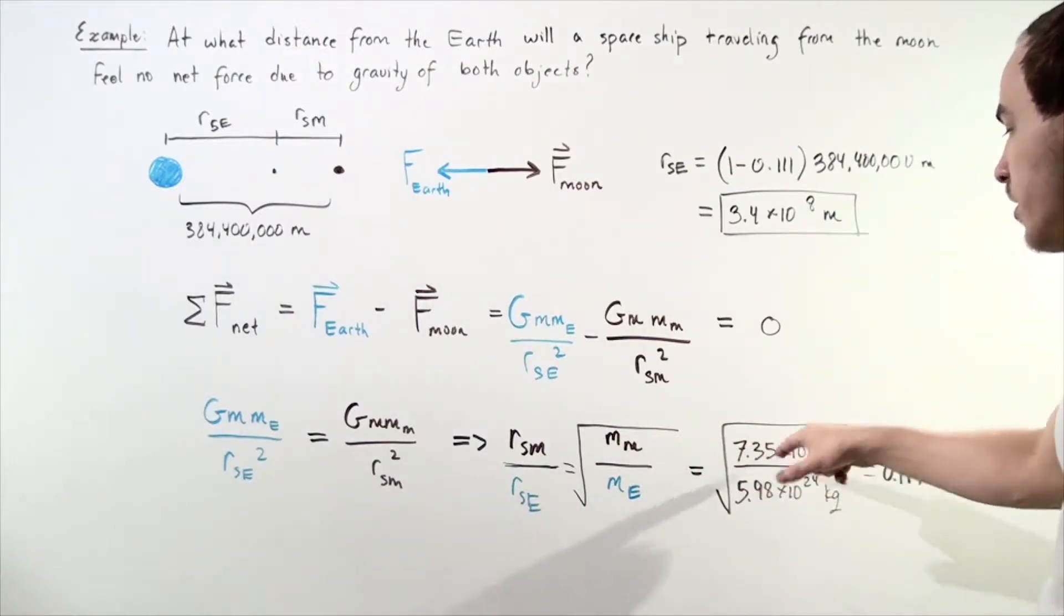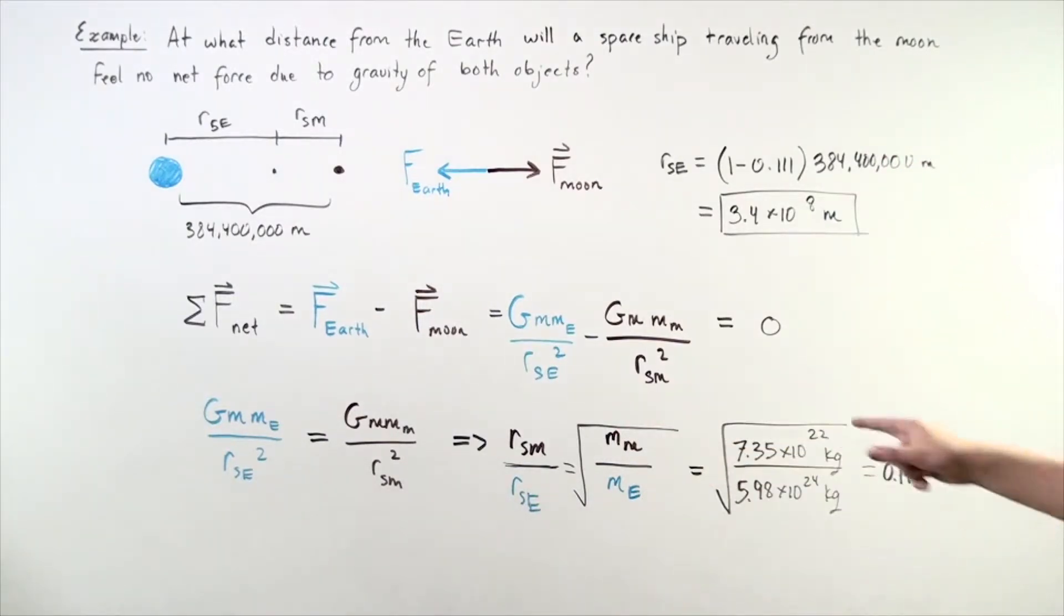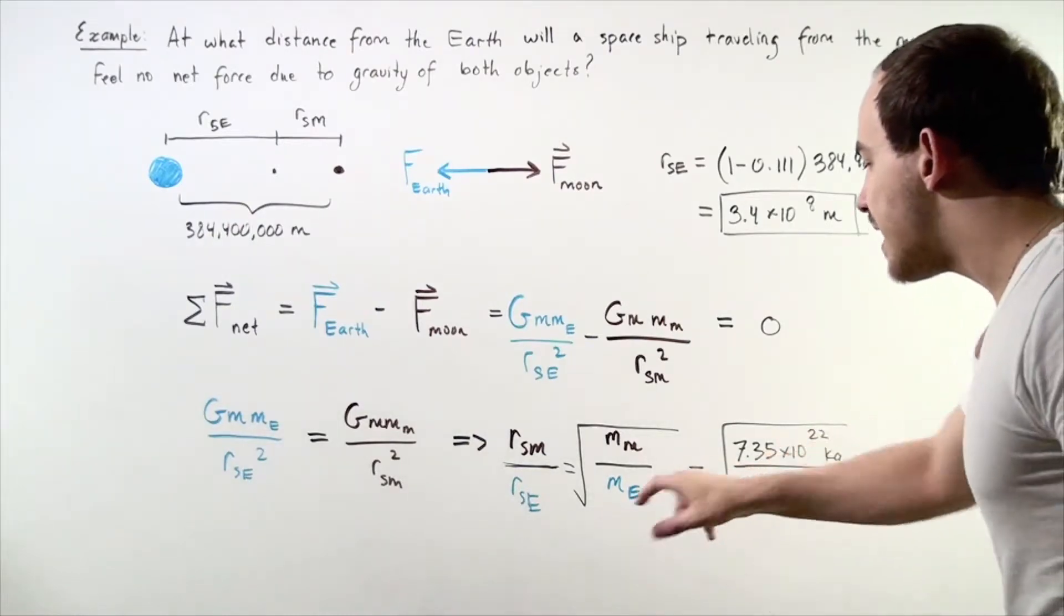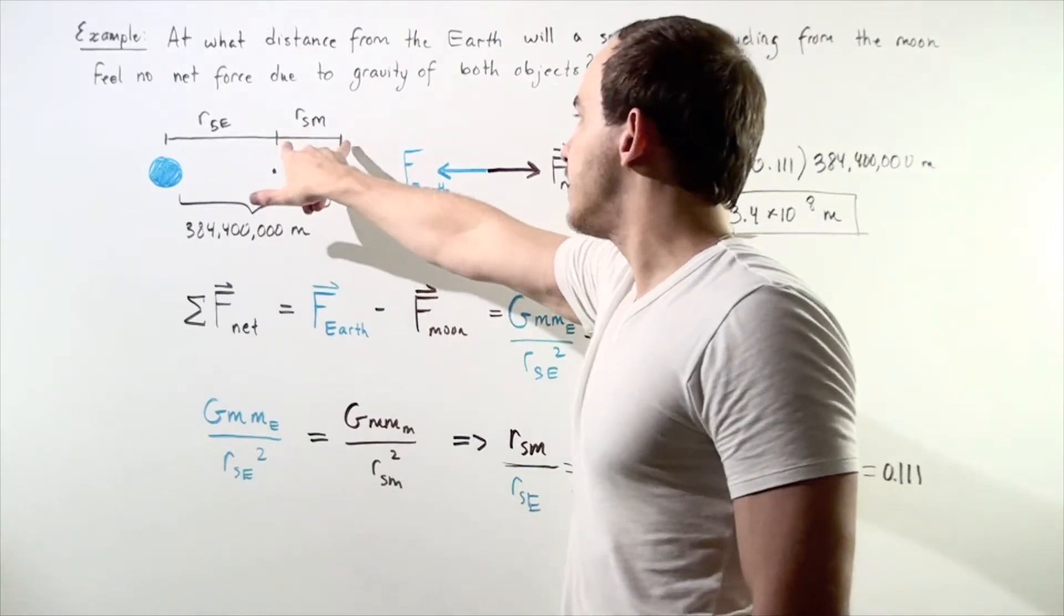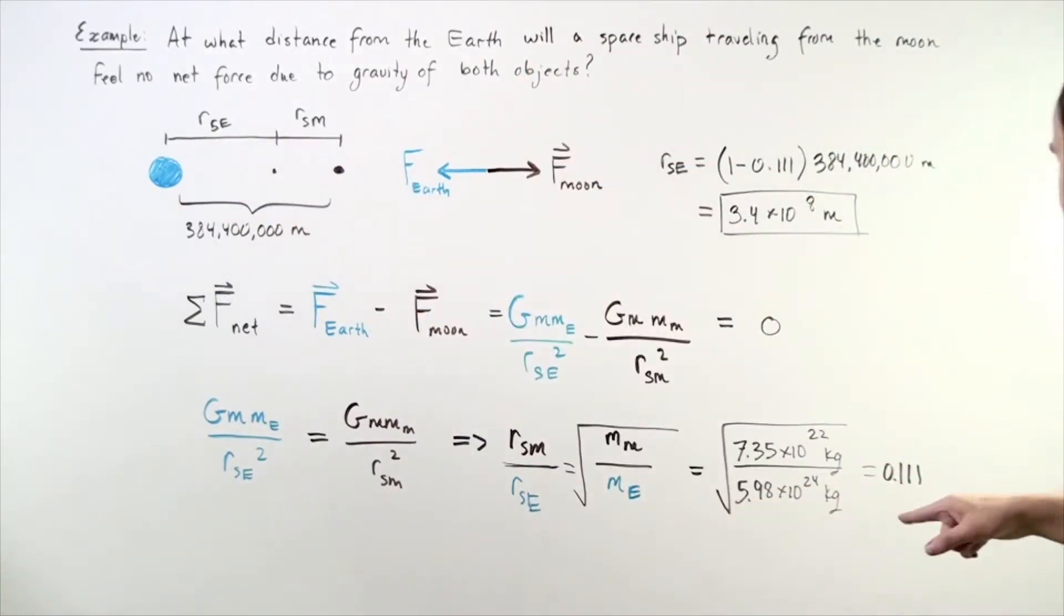The mass of the Moon is 7.35 times 10 to the 22 kilograms, and the mass of the Earth is 5.98 times 10 to the 24 kilograms. We divide, we take the square root, and we get the ratio of this length to this length to be 0.111.